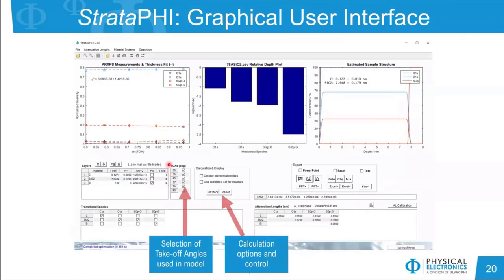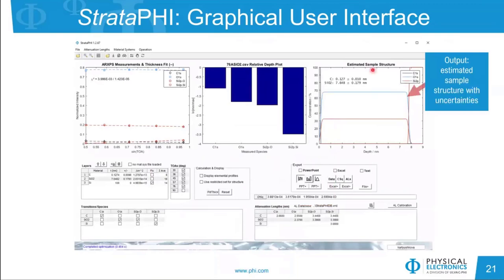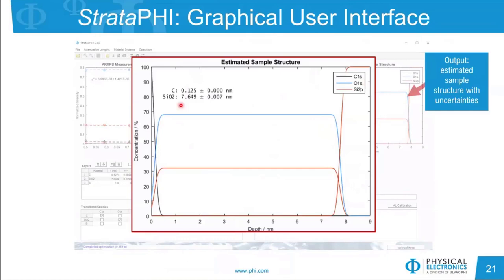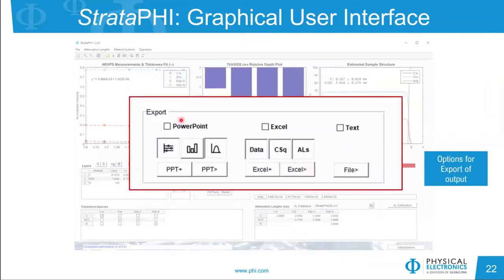The other part of the model is assignment of transition species to the defined layers. Carbon C1s is only present in the carbon overlayer; silicon oxide has two transitions — one from oxygen and one from the silicon 2p spectrum; the substrate has a transition from elemental silicon in the silicon 2p spectrum. This defines the model in terms of data. Options include which angles to use — all angles, a subset, or one angle — along with calculation controls. Once ready, clicking Fit estimates the sample structure, showing concentration as a function of depth for carbon, oxygen, and silicon, including uncertainty represented by the width of the profile.